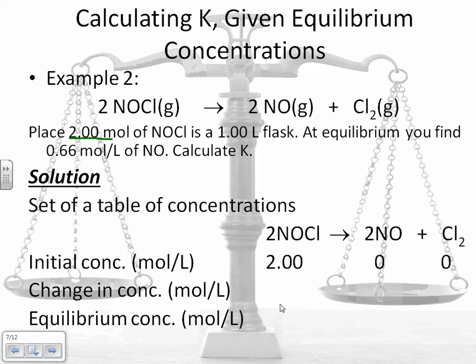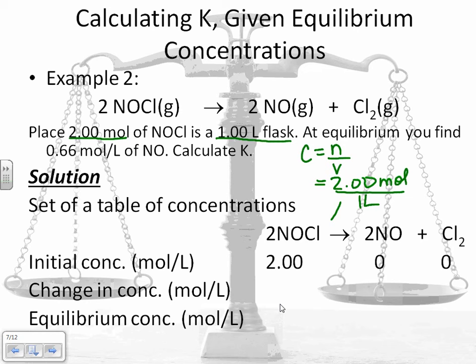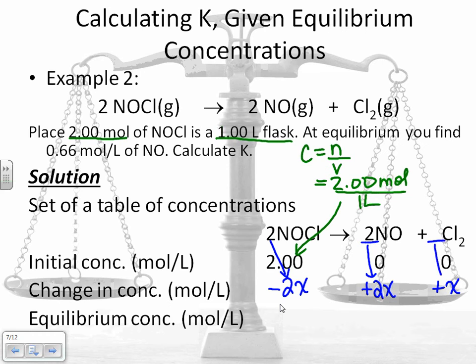Remember, I said up in the question, place 2 moles of that in a 1 liter flask. If you go back to what you know from grade 11, concentration is moles divided by volume. So I have 2.00 moles in a 1 liter flask. That's how I got 2.00 moles per liter there. And if that's the only thing that I'm putting into my flask, then I have nothing as a product. I'm going to seal it up, wait for the reaction to happen. As it happens, my concentration of my reactants is going to go down by 2x. Remember to use your exponents in here. My concentration of my products have nowhere to go but up. So this one's going to go up by 2x, and Cl2 is going to go up by x. Make sure you bring your coefficients down in there.